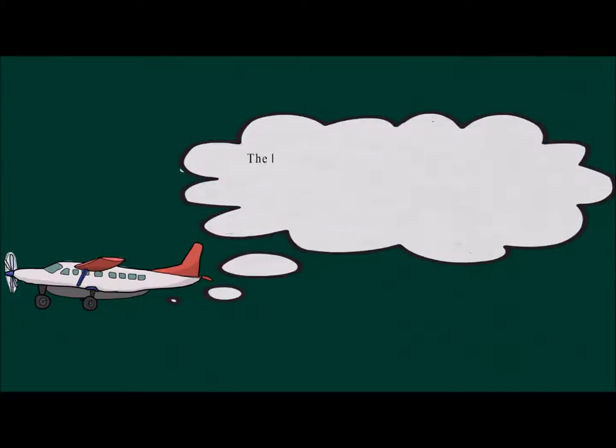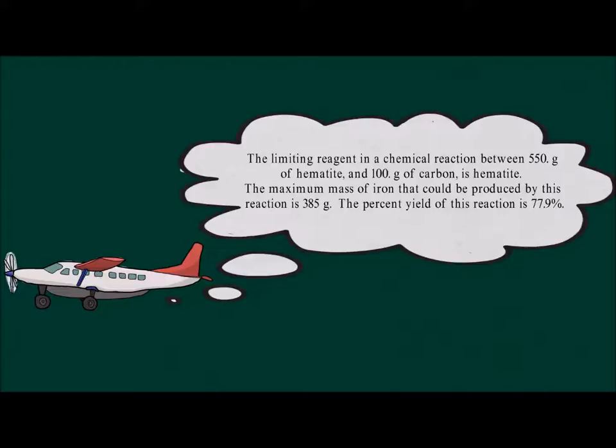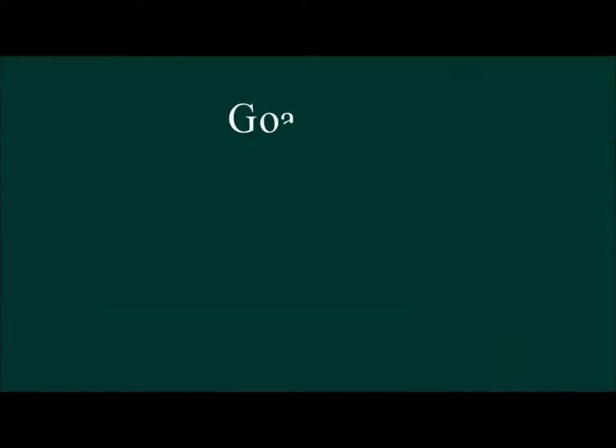Now that we have completed the calculations required for this problem, all that is remaining is to write our concluding statement. The limiting reagent in a chemical reaction between 550 grams of hematite and 100 grams of carbon is hematite. The maximum mass of iron that could be produced by this reaction is 385 grams. The actual yield of this reaction divided by the theoretical yield gives us a percent yield of 77.9%. This concludes our limiting reagent and yield example.